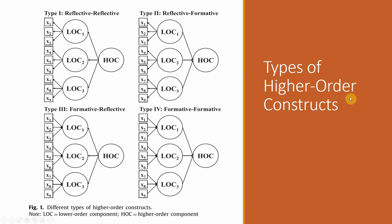The four types of higher order constructs are: Type 1 — reflective-reflective, where arrows point from the higher order construct toward the lower order constructs (which serve as indicators); Type 2 — reflective-formative, where first order constructs are reflective and the lower order constructs form the higher order construct; Type 3 — formative-reflective, where indicators X1, X2, X3 form the lower order constructs and the higher order construct is reflected in the lower order constructs; Type 4 — formative-formative. The most common types are Type 1 (reflective-reflective) and Type 2 (reflective-formative).